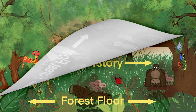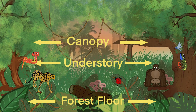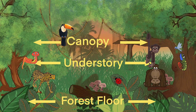The canopy is the second last layer. The branches and leaves cover most of the understory and forest floor layer, allowing very little sunlight to seep through. You will find monkeys, birds and reptiles on this layer.